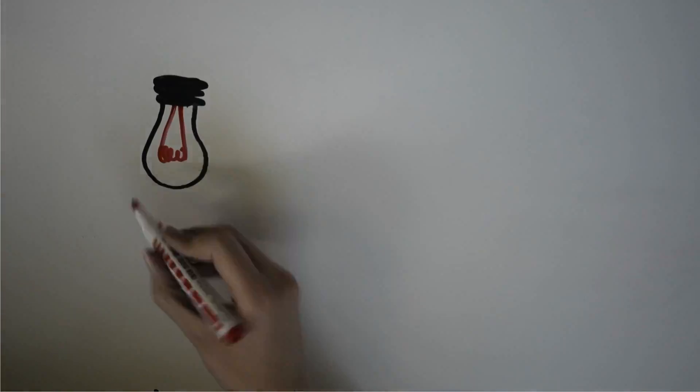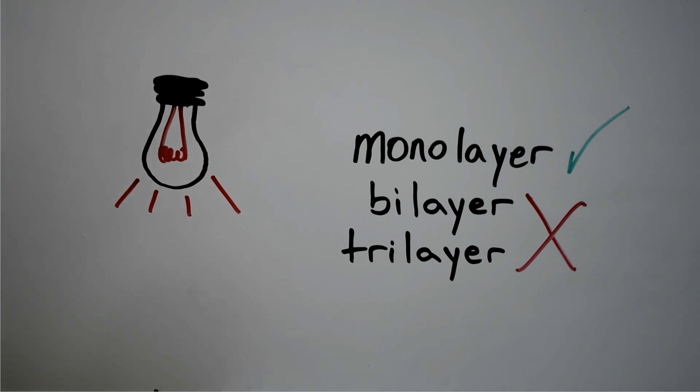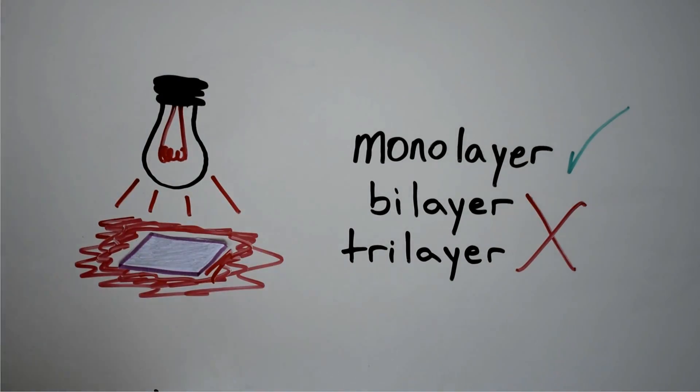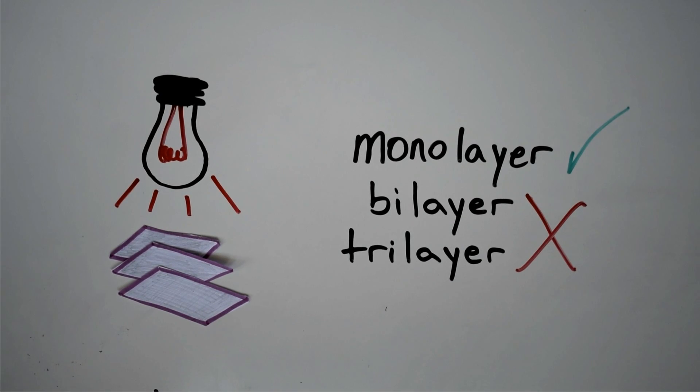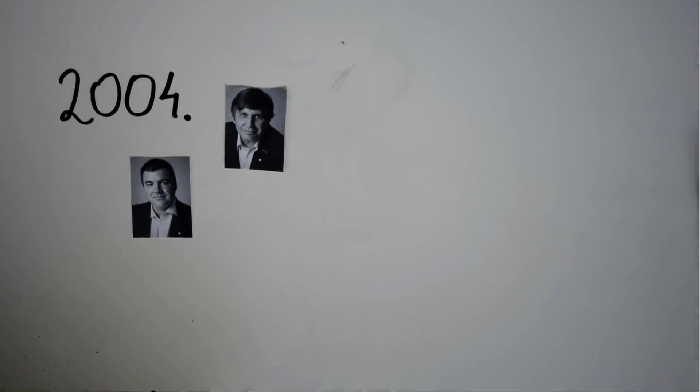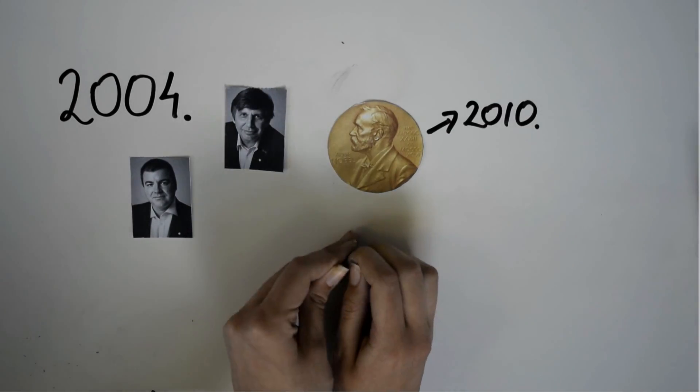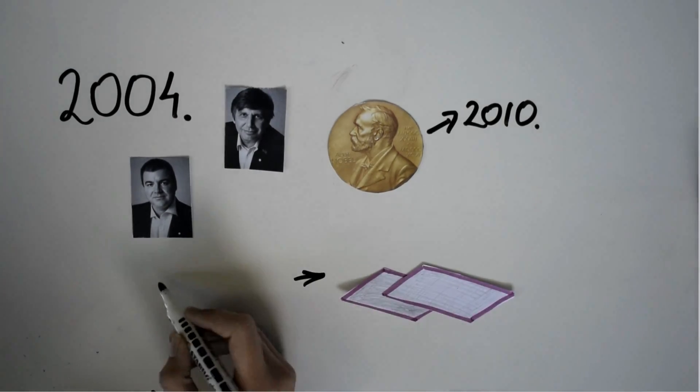TMD monolayers are direct bandgap semiconductors, meaning they strongly emit light when excited electrically or optically. These properties are present only in monolayers. Even though the atoms in a layer are very strongly bonded, the layers aren't. Because of this, it is possible to separate only one layer.